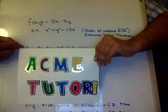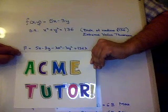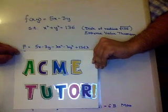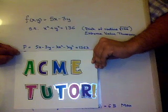So let's see. So here we have f bar, and f bar is 5x minus 3y minus lambda x squared minus lambda y squared plus 136 lambda.